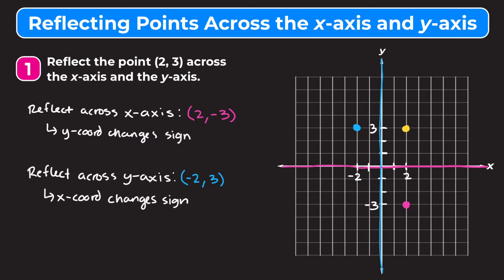Our original x-coordinate was 2, but when we reflected it across the y-axis our x-coordinate is now negative 2 — the y-coordinate stays as it is. To summarize: when you reflect something across the x-axis, the y-coordinate flips signs — positive becomes negative and negative becomes positive. When you reflect a point across the y-axis, the x-coordinate changes signs — positive becomes negative and negative becomes positive.